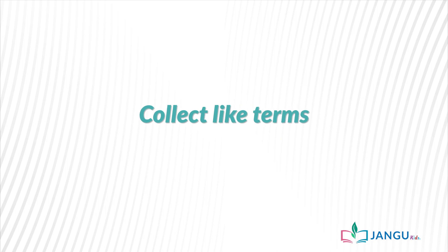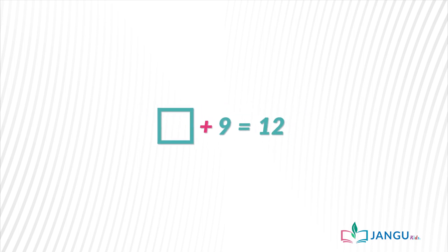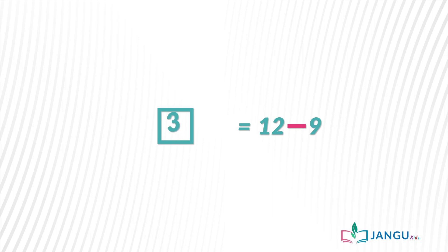The first thing to do is to collect like terms. Collecting like terms means to put all similar numbers on the same side. 9 and 12 are like terms because both of them are natural numbers or integers. Therefore we move 9 over to meet 12 across the equality sign. When plus 9 crosses the equality sign it becomes minus 9. So: unknown value = 12 − 9 = 3. Therefore we write 3 in our blank square box. Come to think of it, 3 + 9 gives us 12.